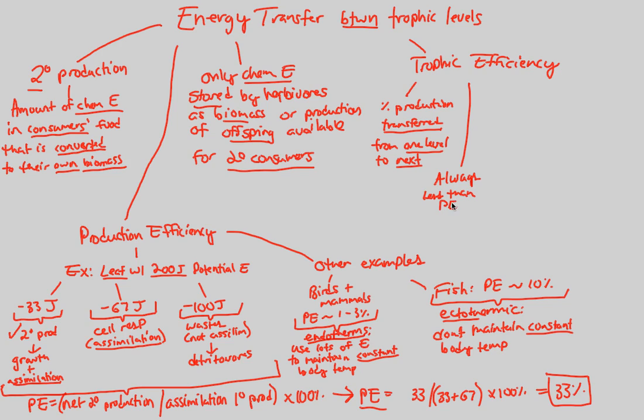What we mean by this, always less than production efficiency, why is trophic efficiency always less than production efficiency? That's because not all organisms matter at lower level is consumed.